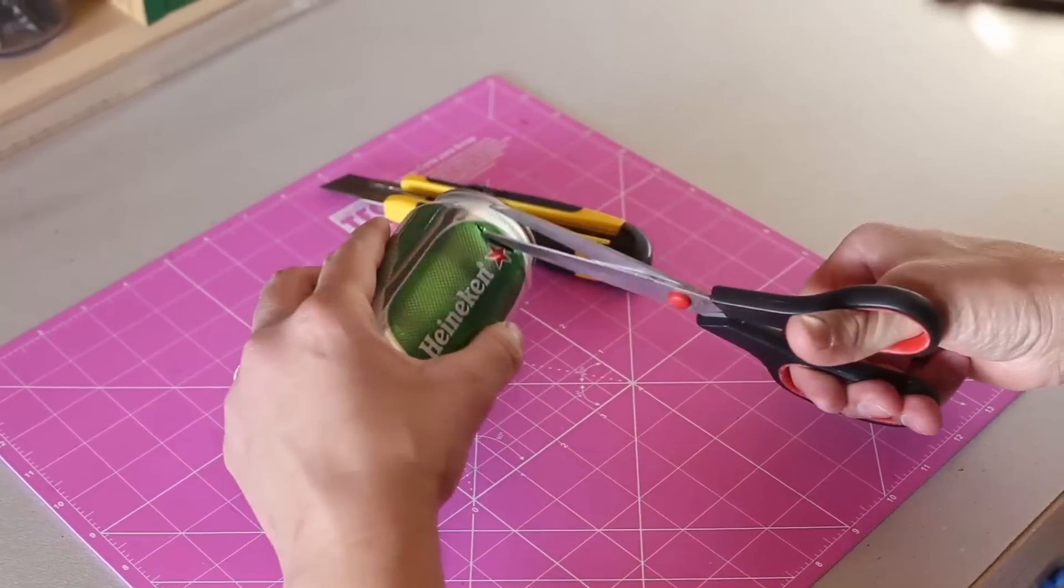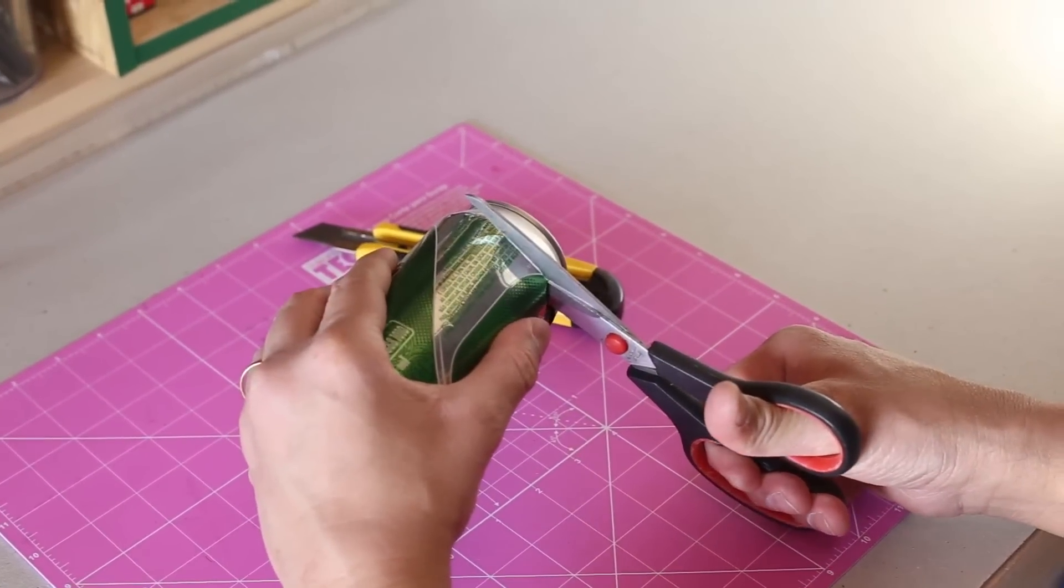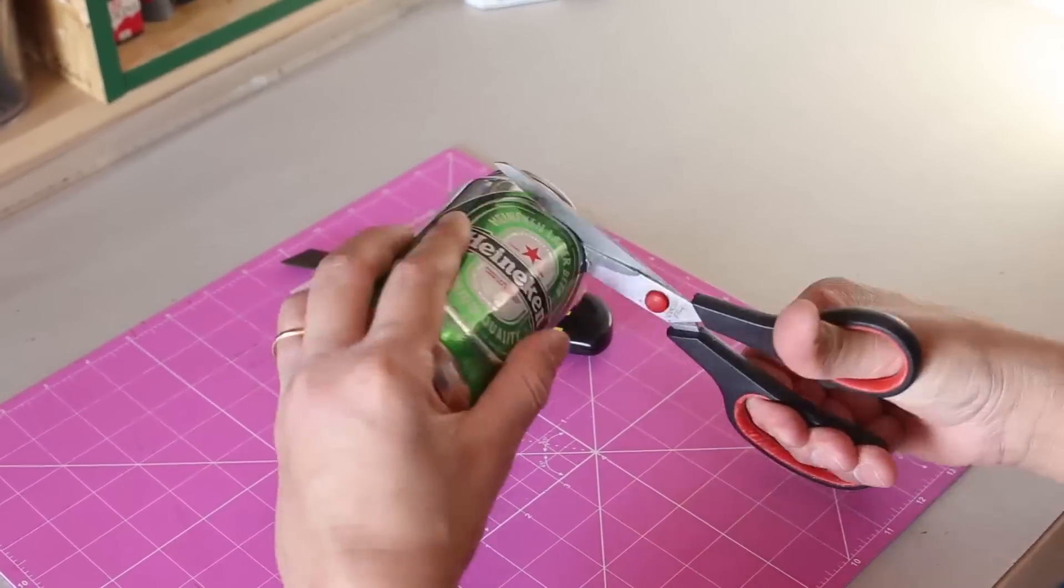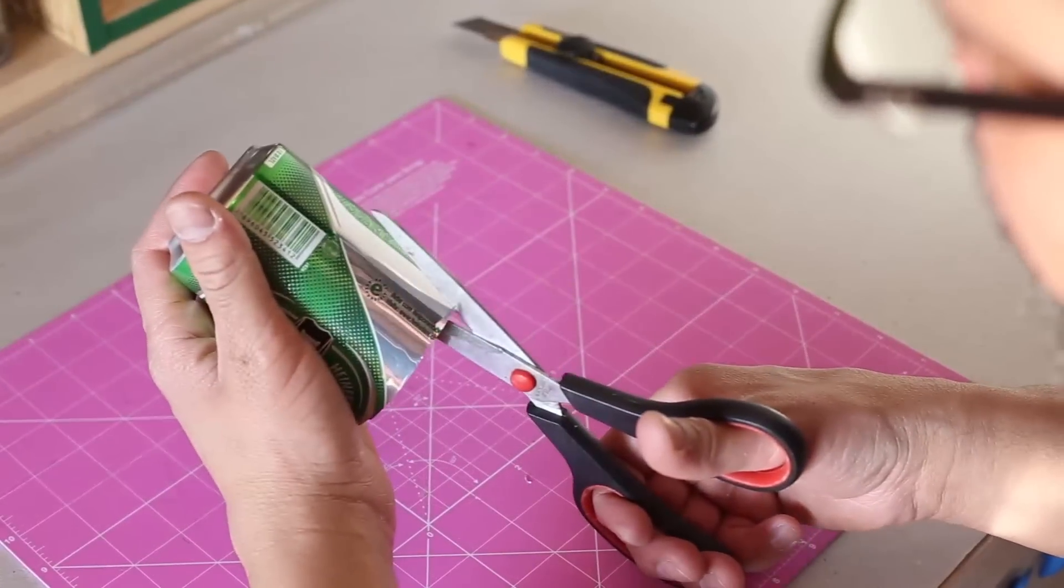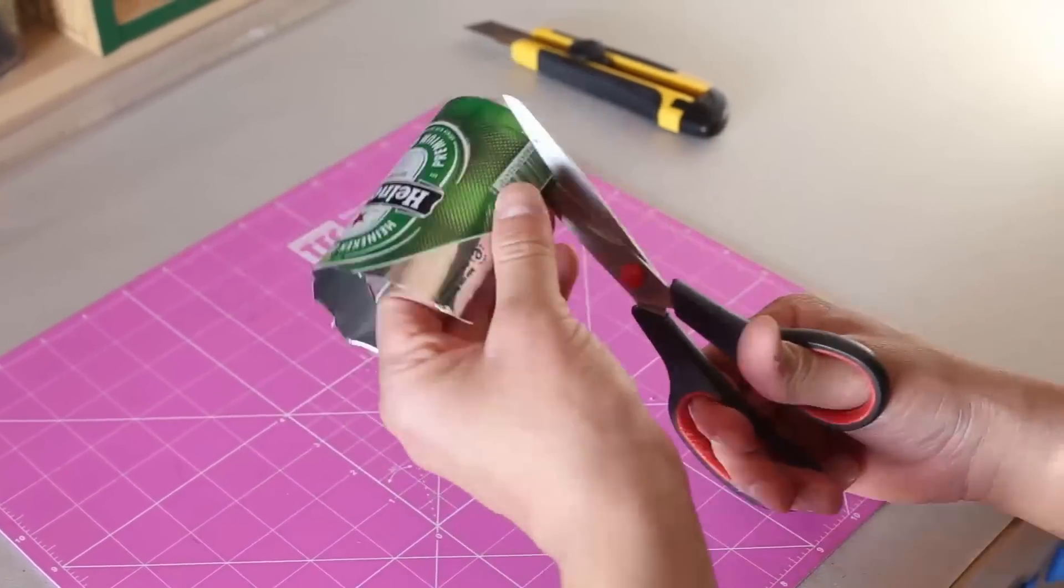Take your scissors and remove the top and the bottom of the can. You will only need the flat middle section. Take care, don't cut yourself.